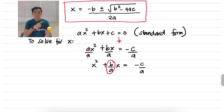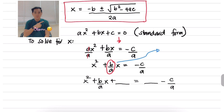The next thing to do is I'm highlighting this coefficient here, b over a, because we are going to look for the third term to make it a perfect square trinomial. So remember the perfect square trinomial — we are going to look for a perfect square trinomial here.